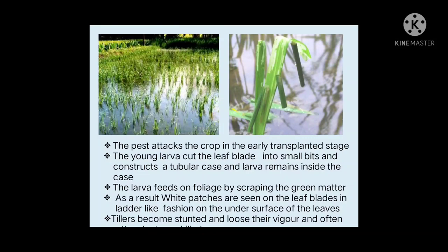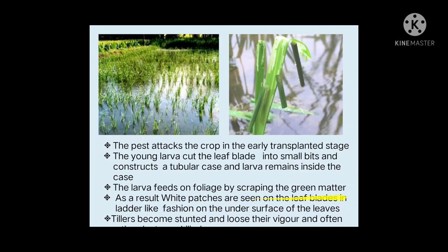When a case falls into the water, it floats toward another plant and attacks it — this is how the pest moves from one plant to another. The pest attacks the crop in the early transplanted stage. Young larvae cut the leaf blade into small bits and construct a tubular case. They stay inside the case and feed on the foliage by scraping the green matter, causing white patches to form on the leaf blade in a ladder-like fashion.